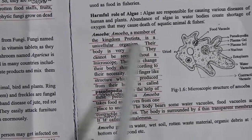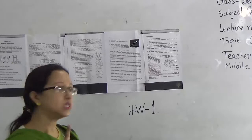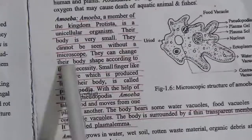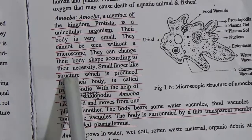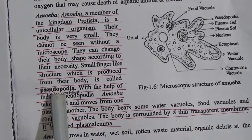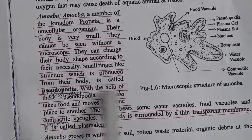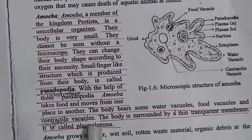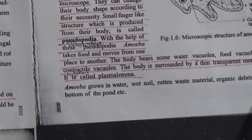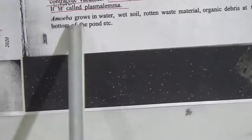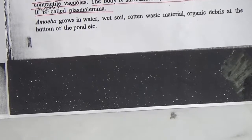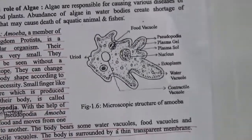Amoeba is a member of kingdom Protista and is a unicellular organism — it has only one cell. Its body is very small and cannot be seen without a microscope. Amoeba can change its body shape according to necessity. Small finger-like structures produced from its body are called pseudopodia; with the help of pseudopodia, amoeba takes food and moves from one place to another. The body contains water vacuole, food vacuole, and contractile vacuole, and is surrounded by a thin transparent membrane called plasmalemma.